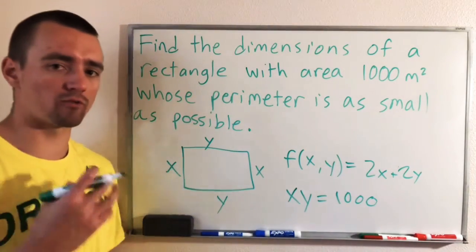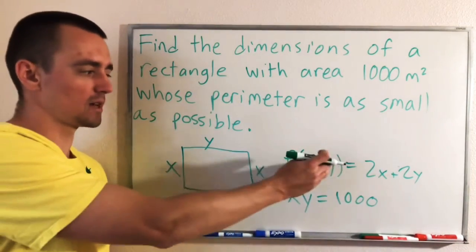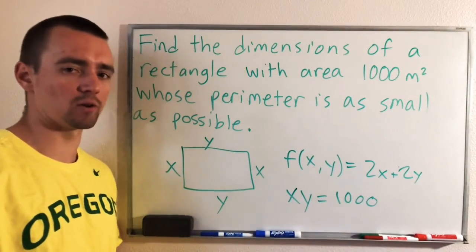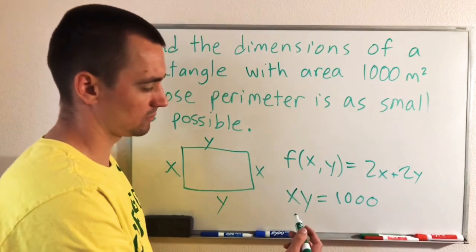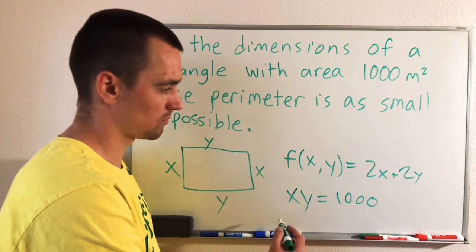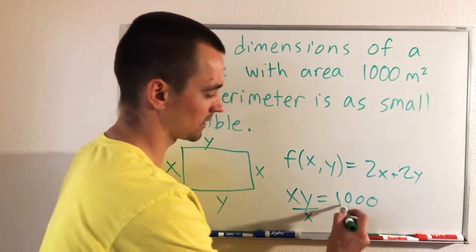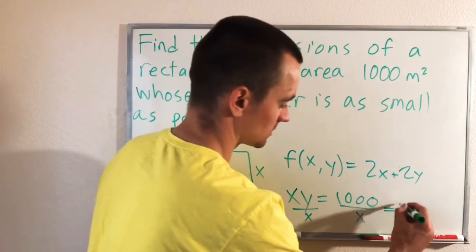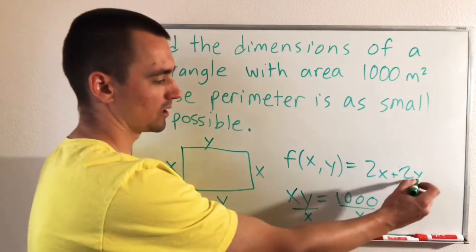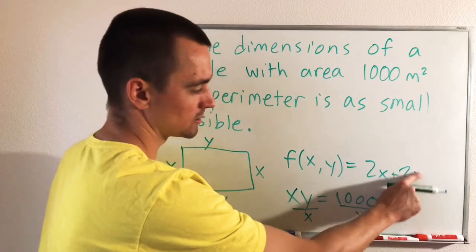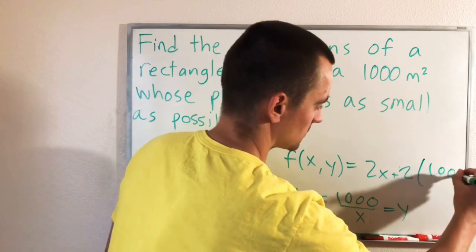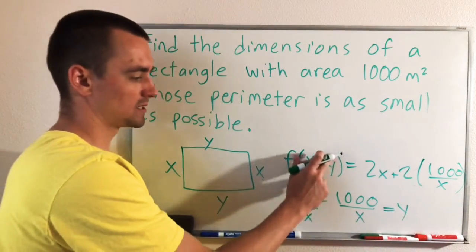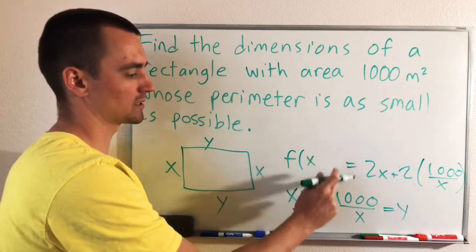So if we take this equation and we solve it for one of the variables, we can plug that into our function that we're trying to optimize, and that'll reduce it down to a single variable. So we could just solve, let's say, for Y. So we can just divide both sides by X. And that tells us Y equals 1,000 over X. So we can take this and plug it in for Y here. Replace our Y with 1,000 over X.